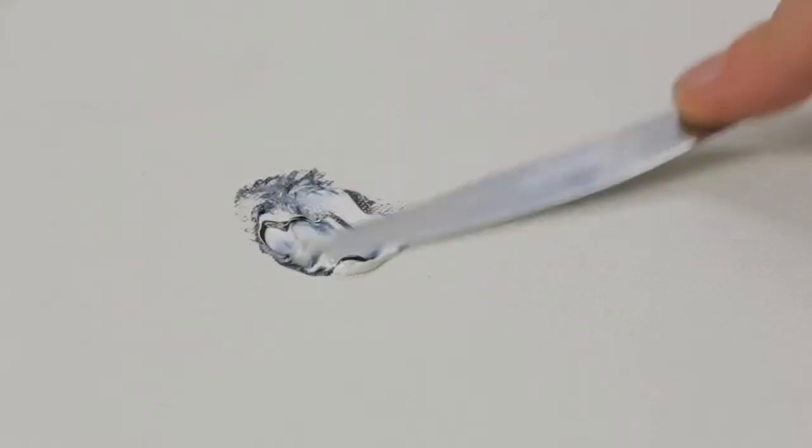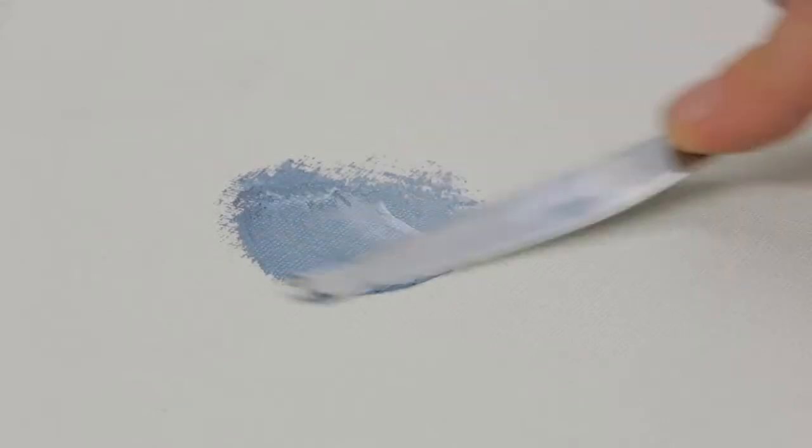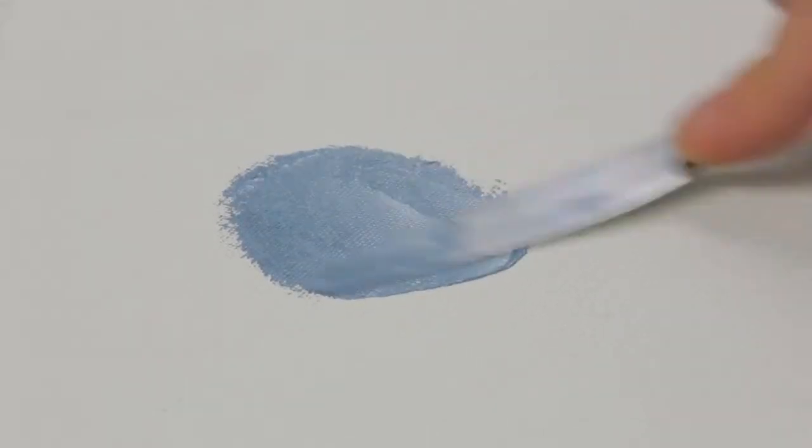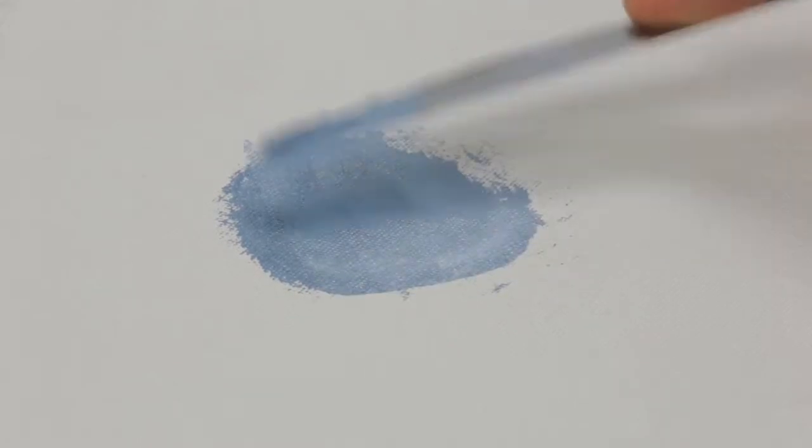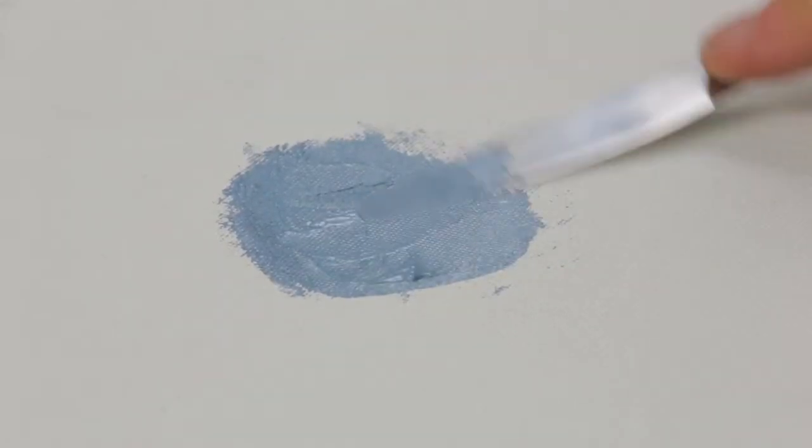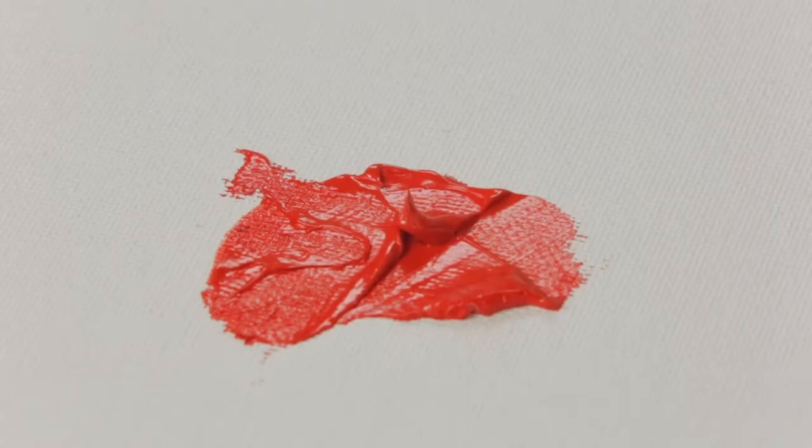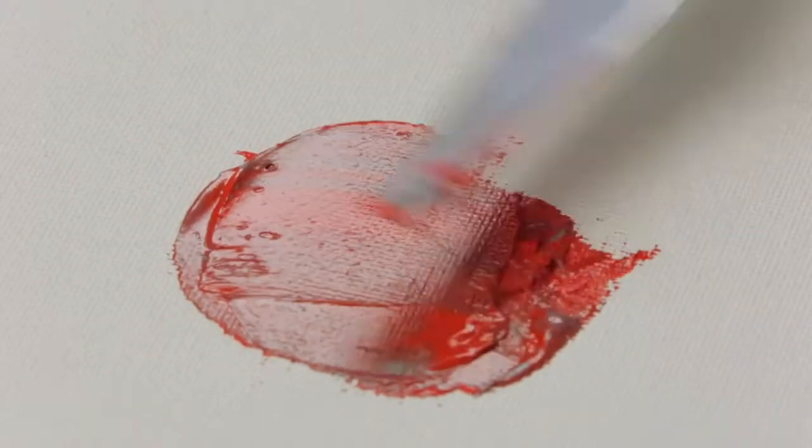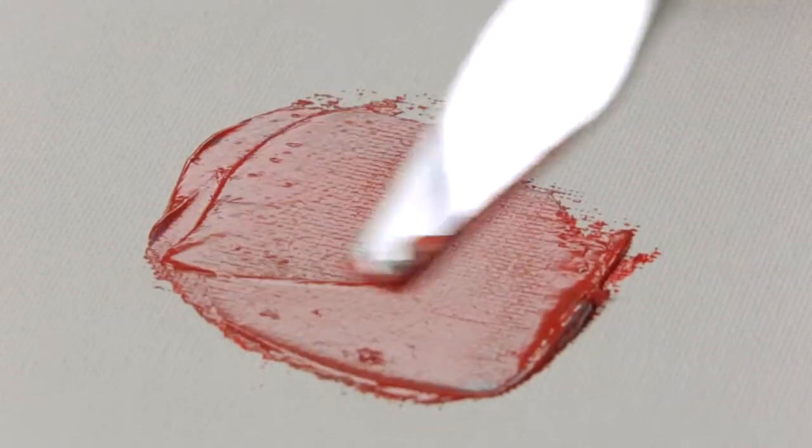I'm adding titanium white to the black to bring it to as close as I can the same value as the cadmium red. By incrementally adding this mid-toned grey to the red I can reduce its level of saturation but retain its value.